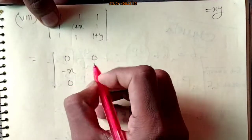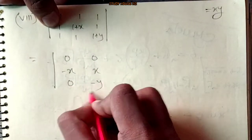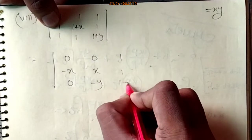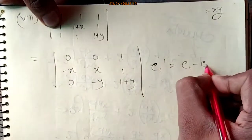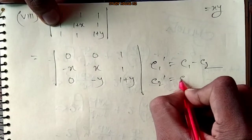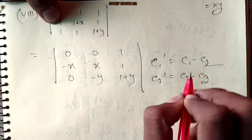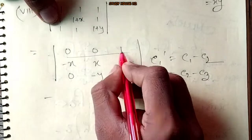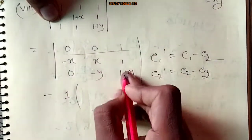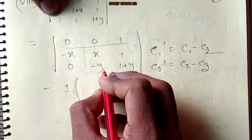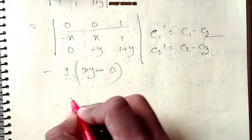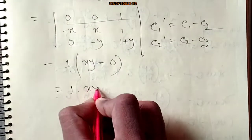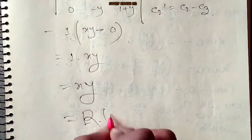C1 prime equals C1 minus C2, C2 prime equals C2 minus C3. And the second one: A minus X, minus Y, minus X into 0 minus 0. Thumbna 1 into XY, thumbna XY. Right-hand side.